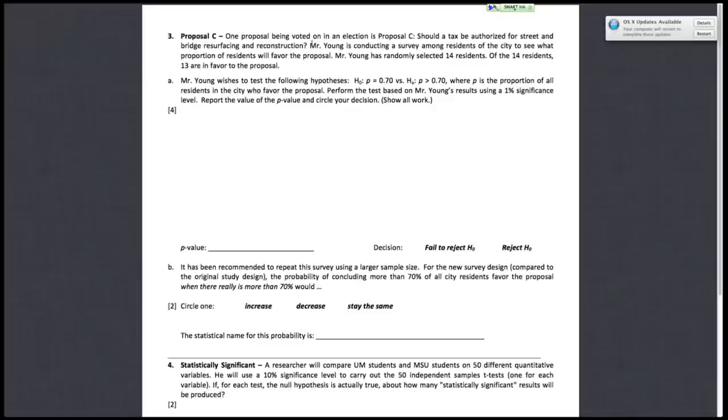Right, so let's do number three, 3A. You are supposed to perform the test based on Mr. Young's results using a 1% confidence level, report the value of the p-value, and circle your decision. So the first thing you want to notice is that your n, your sample size, is 14, and your p in this situation is 0.7. So immediately you can probably guess that you will not be able to perform the large sample z test in this situation because the two conditions that you need to be satisfied won't be satisfied due to the small sample size. So in this case, you want to do the small sample binomial test.